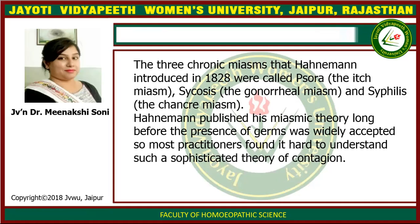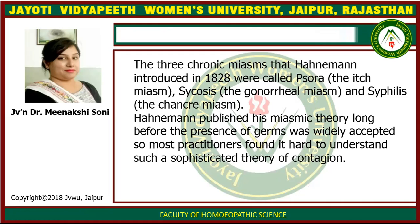The three chronic miasms that Hahnemann introduced in 1828, collected from the Organon of Medicine, are: Psora — the itch miasm; Sycosis — the gonorrheal miasm; and Syphilis — the chancre miasm. Hahnemann published his miasmatic theory long before the presence of germs was widely accepted, so most practitioners found it hard to understand such a sophisticated theory of contagion.